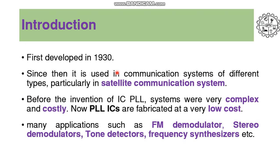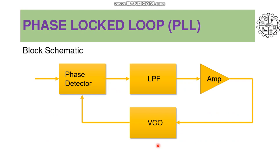It was first developed in 1930. Since then, it is used in communication systems of different types, particularly in satellite communication systems. Before the invention of IC PLL, systems were very complex and costly. Now PLL ICs are fabricated at a very low cost. Many applications such as FM demodulator, stereo demodulators, tone detectors, frequency synthesizers, etc. Now let us see the block diagram of phase lock loop.